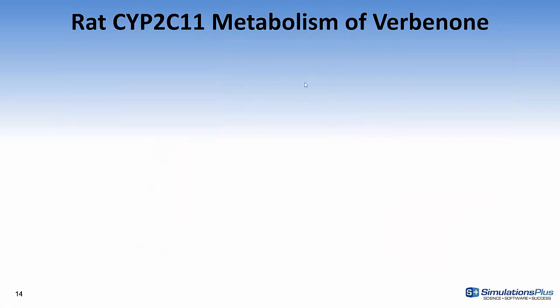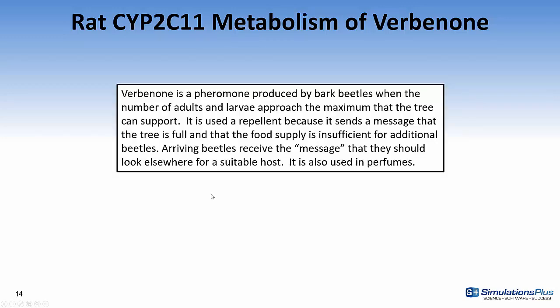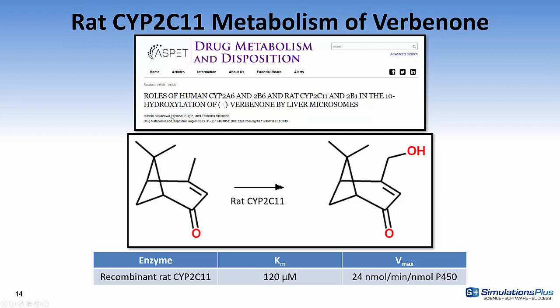I'll use a compound called verbenone to illustrate entering the rat CYP2C11 kinetics, which will of course use the expression levels defined in the various tissues. Verbenone is actually a pheromone produced by bark beetles. When the number of adults and larvae approach the maximum number that the tree can support, the beetles start excreting this pheromone. It's been used as a repellent — if you put it on a tree, it would signal to the beetles that their food supply is insufficient and they should move on to a more suitable host. Verbenone is also used in perfumes.